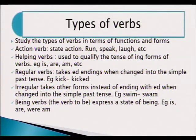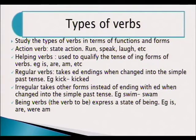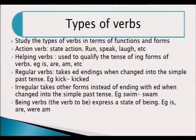Then we have types of verbs. Apart from just knowing the definition of what a verb is, it's very important to appreciate that there are different types of verbs we use in everyday language. There are action verbs — action verbs state an action. We all know verbs are doing words, but there are those words that will not express any action. Those that do express action — like 'run', we can see you in motion running. If you are speaking or if you love, there is some act that you do.